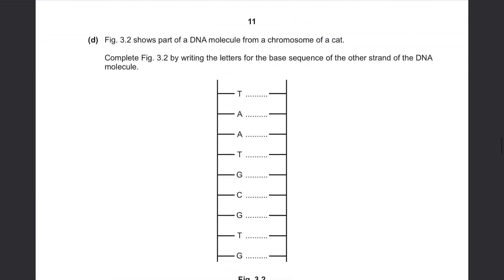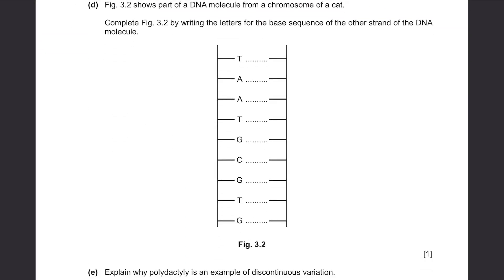Part D. Figure 3.2 shows part of a DNA molecule from a chromosome of a cat. Complete Figure 3.2 by writing the base sequence of the other strand. A bonds with T and G bonds with C. The complementary strand bases are: T, A, T, T, A, C, G, C, A, C.